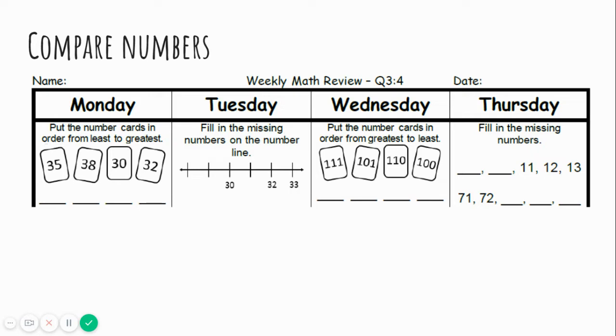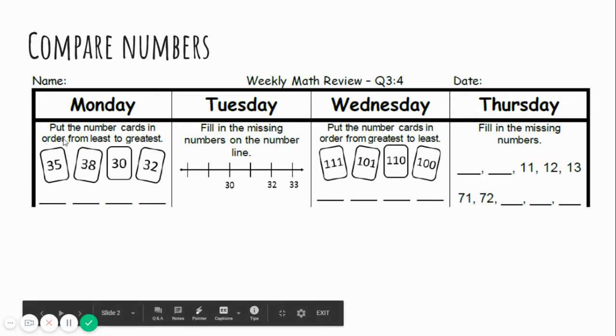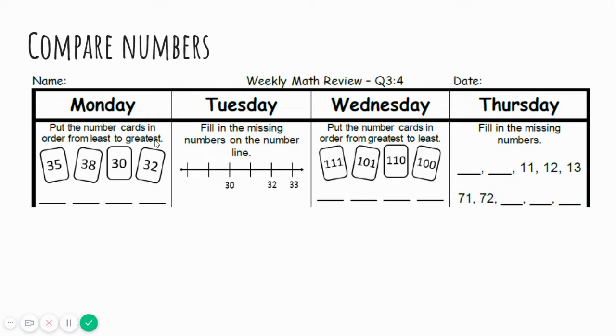It says put the number cards in order from least to greatest. So that means the smallest number to the biggest number. Which one is smallest? Good. 30 is the smallest number. Which number would come next? 36, 32, then 35, then 38.